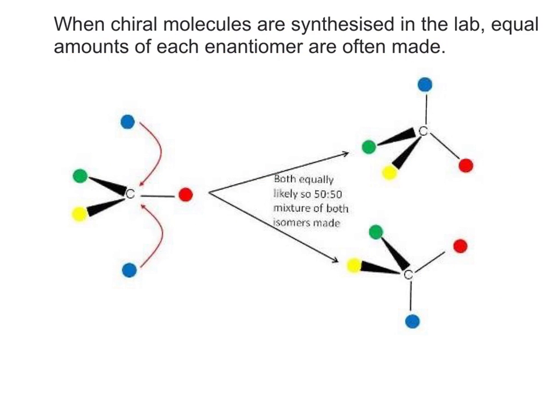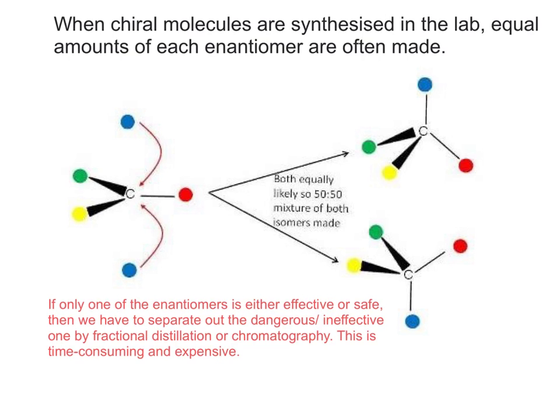When we manufacture chiral molecules in the lab, usually equal amounts of each enantiomer are made. If only one of the enantiomers is either pharmacologically effective or indeed safe, then we have to separate out the one that's dangerous or ineffective. We use fractional distillation or chromatography to do this, but this is time-consuming and expensive.